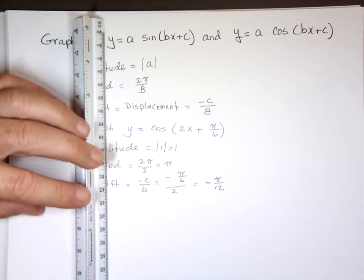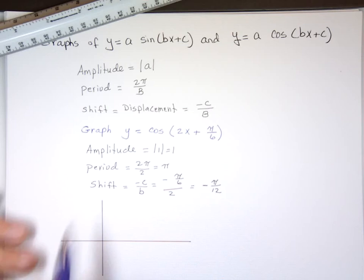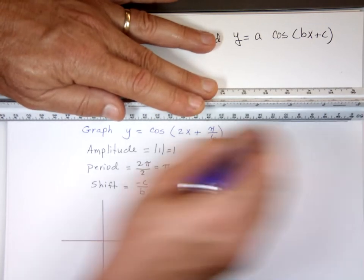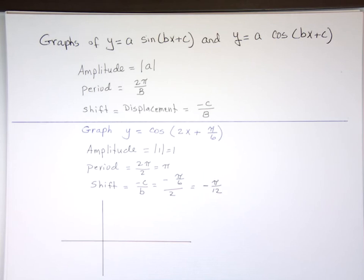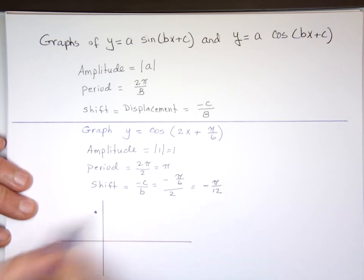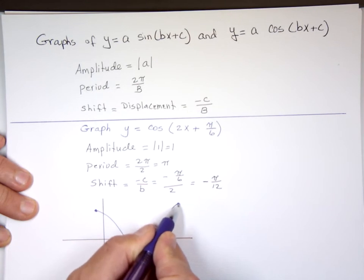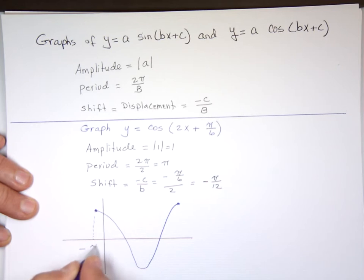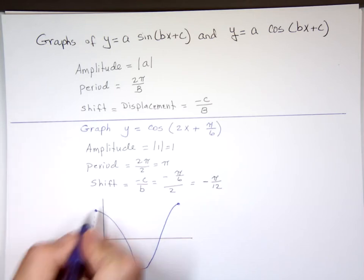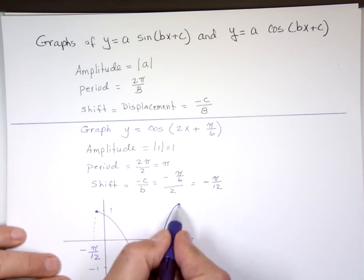So what does that mean when you graph it? Before, we always started from the y-axis. This is a cosine function — cosine starts high — but it's not going to start from the y-axis. It's being shifted backwards, so it's going to start somewhere to the left. This starting point is negative π/12. The function will go as high as 1 and as low as negative 1.